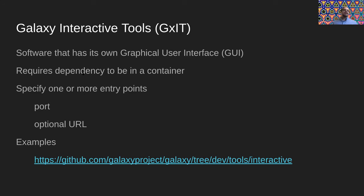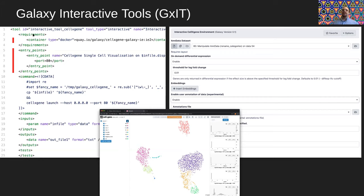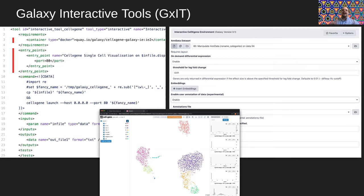Here's an example: we have our familiar Galaxy XML file, a requirement on a container, and we specify an entry point. A user selects the interactive tool, configures it just like they normally would, and clicks execute. But in this case, they end up with an interactive web server launched inside a Docker container that they can interact with, play around with, and look at their data. Basically, you're relying on an external tool that creates an interface outside of Galaxy, and we can integrate those tools inside Galaxy.